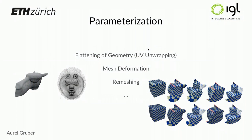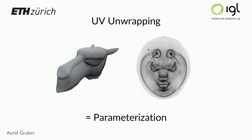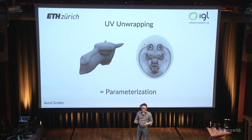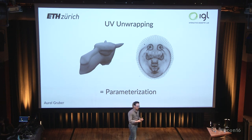Parametrization generally is the process of transforming geometry from one state into another. UV unwrapping is the process of taking 3D geometry and producing a 2D map that has to satisfy certain constraints. In particular, it may not contain any flips — that is especially important for texture painting — and it should minimize some notion of distortion. The less distortion in your mapping, the more usable it is.